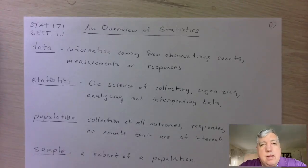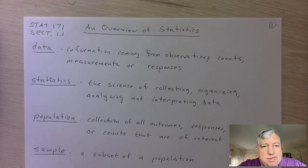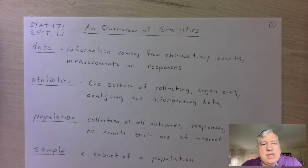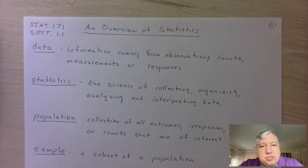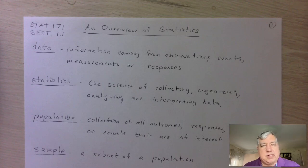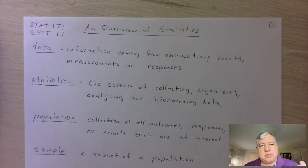Hello everybody, we're going to start with an overview of statistics, Section 1.1. In the first chapter we're really going to be learning a bunch of terms and not doing any calculations per se, but we want to understand what we mean by statistics, what is data, and what's the basic game we're playing. Data is information — specifically it's information that comes from observation, counts, measurements, or responses. We get this information from surveys or observations. Statistics is the science of collecting, organizing, analyzing, and interpreting data.